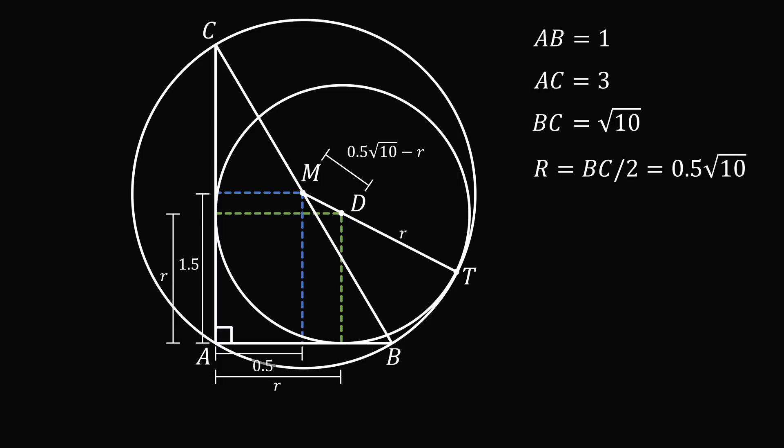Now let's consider the horizontal and vertical distances between M and D. We can find this as the difference between R and 0.5, and the difference between R and 1.5. So we figured out the horizontal and vertical distances between M and D.